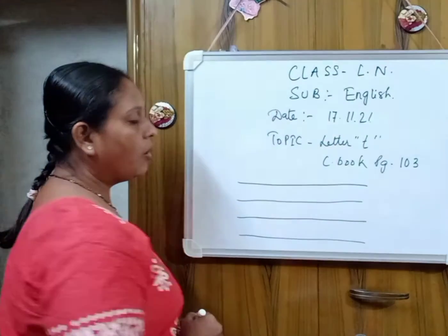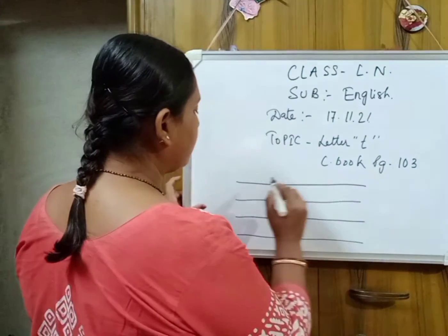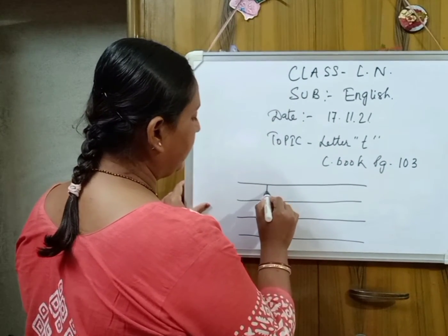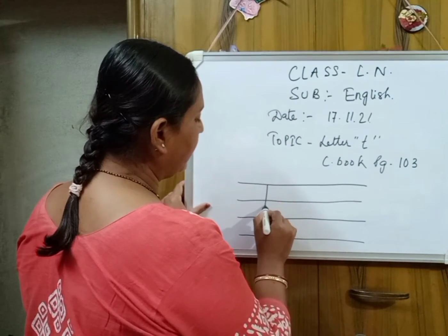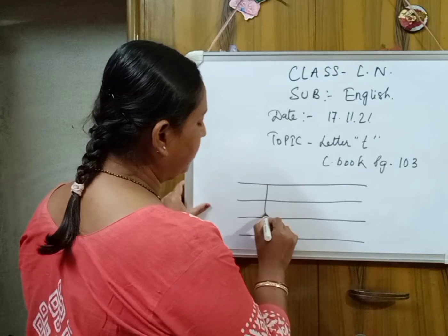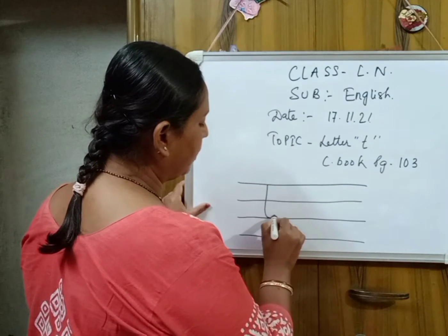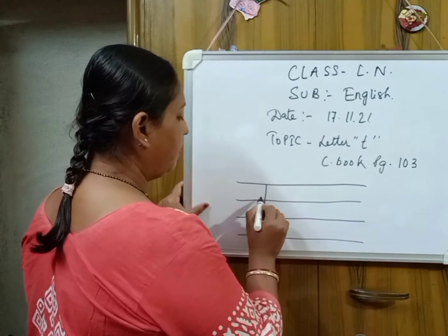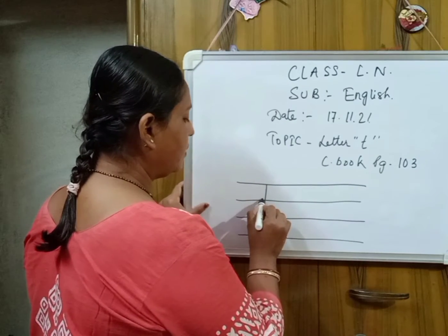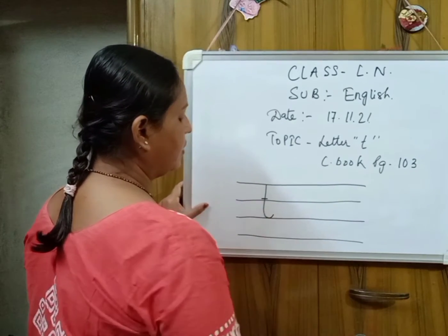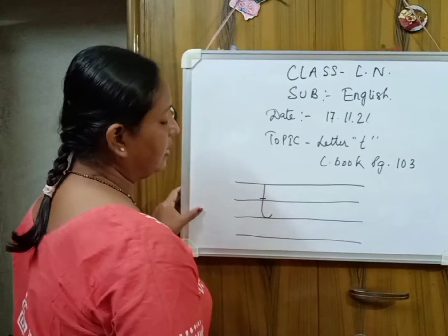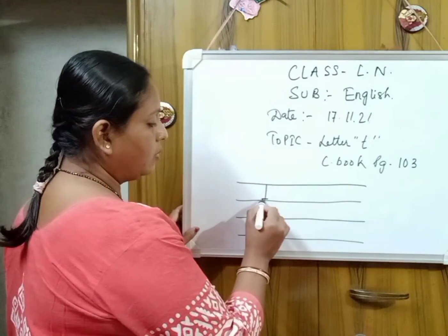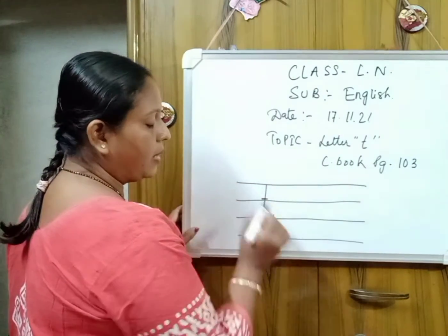To write small letter T, start from the top, making a standing line, come to the down, then make a small curve, then make a standing line — small standing — then a sleeping line, make a small sleeping line.